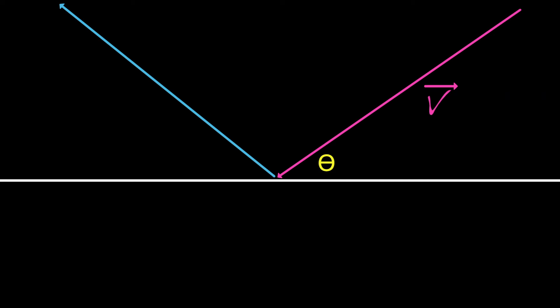But what if the velocity makes an angle with the floor? Let's observe what happens on video. Notice that the bulb bounces just like a light ray reflects off a mirror. That is, if the incoming velocity v makes an angle theta with the floor, then the outgoing velocity, called v prime, makes the same angle.